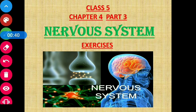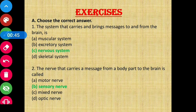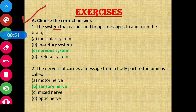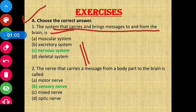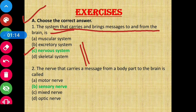Let's start with today's class. Section A: Choose the correct answer. Question 1: The system that carries and brings messages to and from the brain is — the answer is option C: nervous system. Question 2: The nerve that carries a message from a body part to the brain is called — answer is option B: sensory nerves.